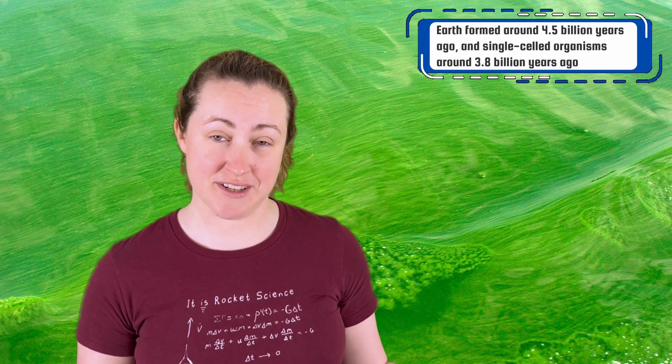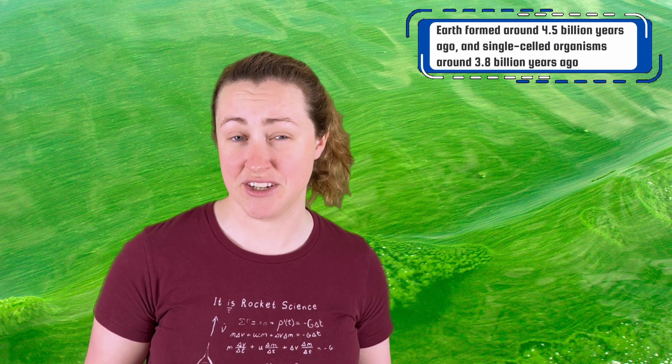On Earth, single-celled organisms appeared around 700 million years after the Earth formed, which is pretty fast. The soupy sludge lived in hostile conditions and relatively abundantly, leading us to assume that life doesn't need much once it gets going.